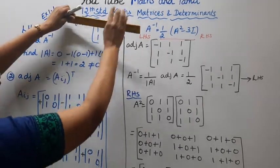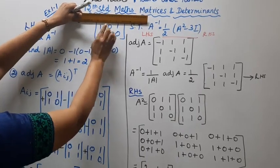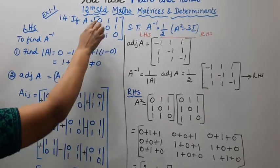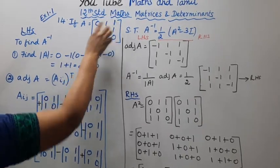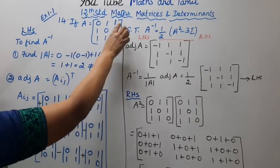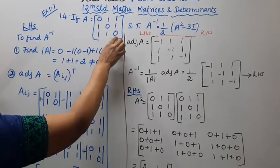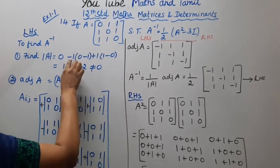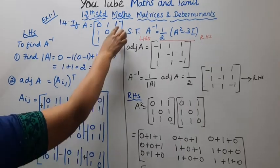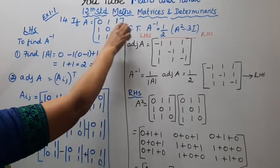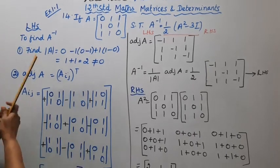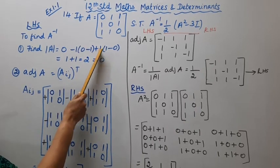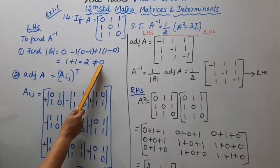Expanding: the element 0 gives 0. The element 1 gives minus 1 times the minor from column [1,1; 1,0], which is 1 into (0 minus 1) = minus 1. The element 1 gives plus 1 times [1,0; 1,1], which is 1 into (1 minus 0) = 1. So determinant A = 0 minus 1 plus 1 = 0... recalculating: determinant is 1, not equal to 0.